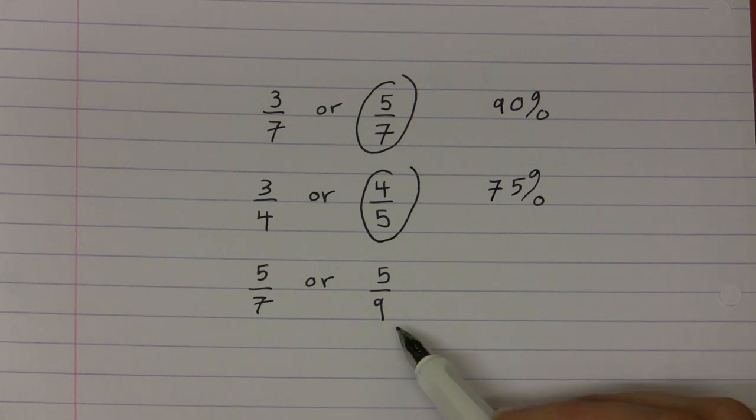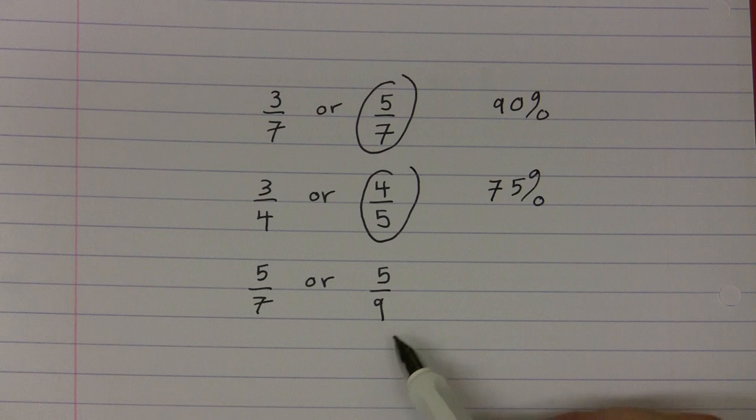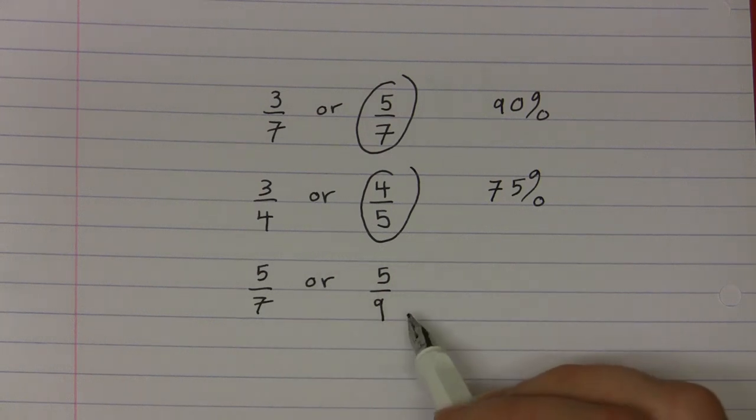What about the final question? Have a go yourself to begin with. Which is larger? 5 sevenths or 5 ninths?